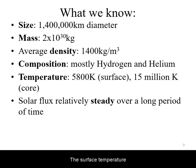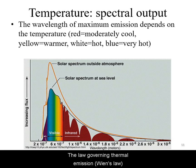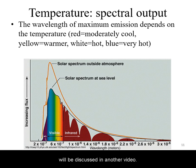The surface temperature of the Sun is 5800 Kelvin. This can be deduced by its overall color. The law governing thermal emission will be discussed in another video.